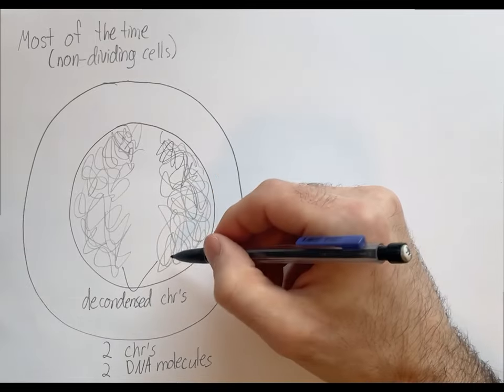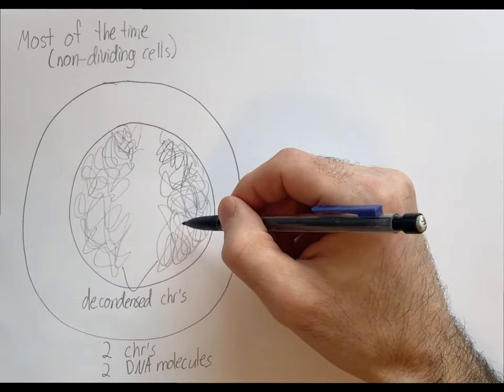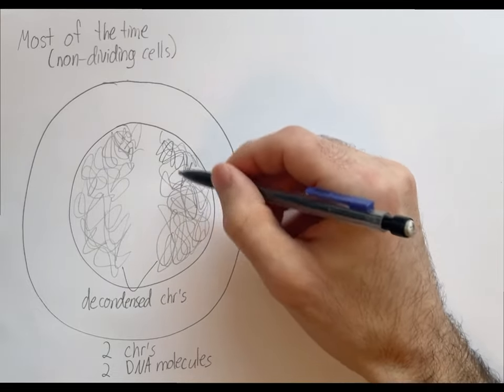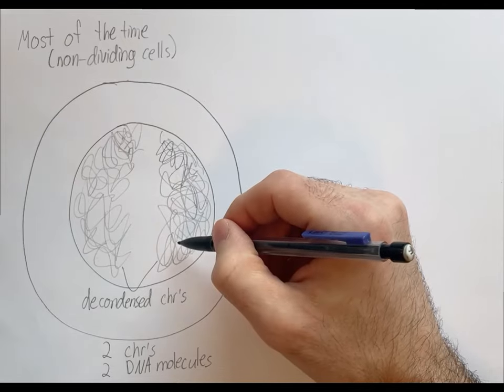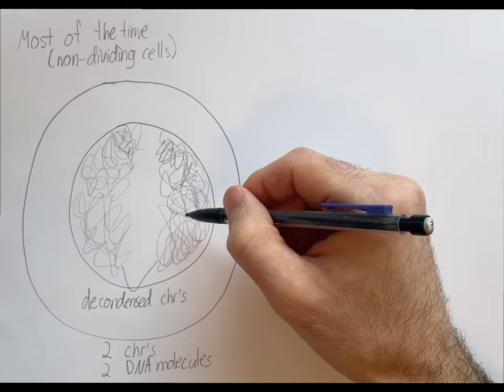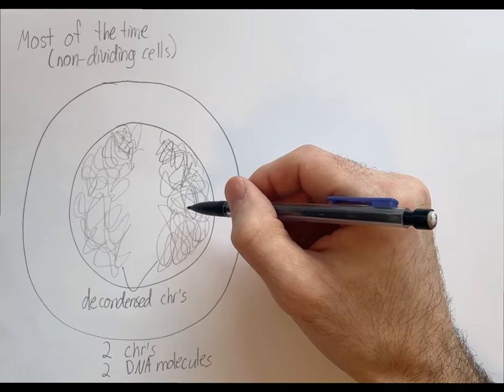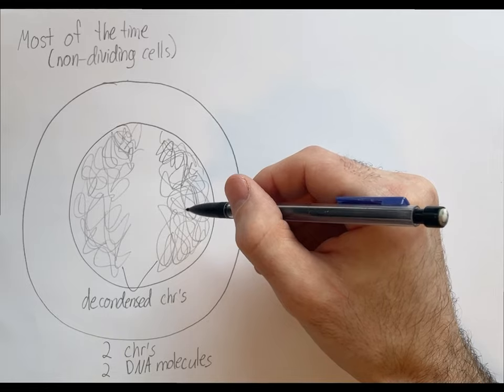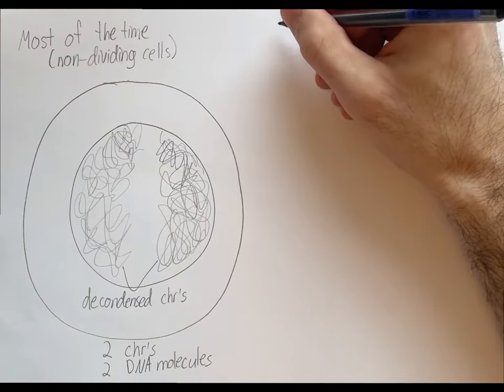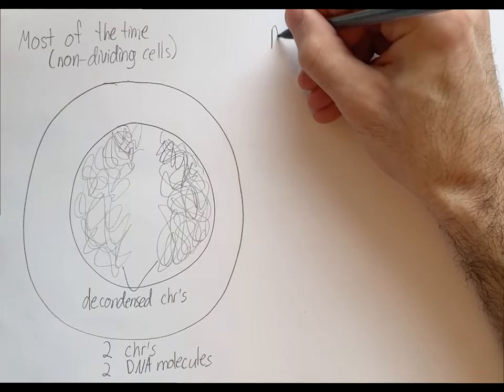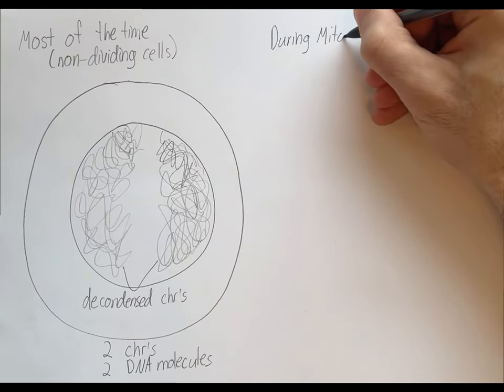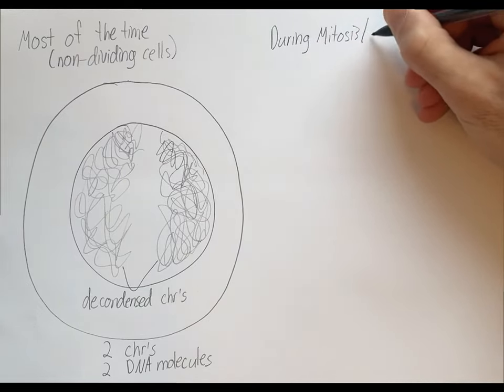Now during cell division, chromosomes and their DNA get moved. So the reason that chromosomes package DNA like this into the chromosome structures that we're used to seeing is for the purpose of moving them into the two daughter cells. So it's basically to make them easier to move during cell division. And that's what we'll look at next. So let's look at what chromosomes look like during cell division, either during mitosis or meiosis.